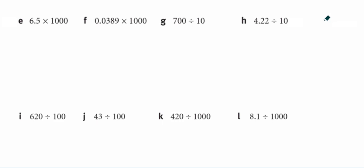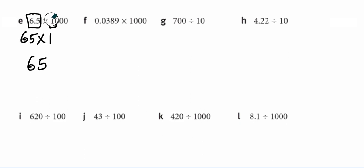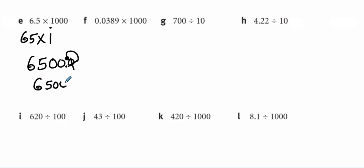We are still moving on with multiplication. Without using a calculator, ignore the decimal point — this becomes 65 multiplied by, ignore the zeros, 65 multiplied by 1. The answer is 65. Because it is multiplication, put these three zeros next to each other, then count how many decimal places are here. We have one decimal place, so count one number from the right hand side. Cut this zero — so the answer is 6,500.